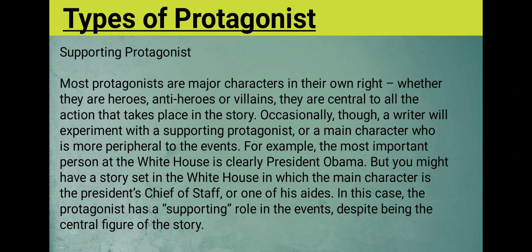Supporting protagonist: most protagonists are major characters in their own right — whether they are heroes, antiheroes, or villains, they are central to all the actions that take place in the story. Occasionally, though, a writer will experiment with a supporting protagonist — a main character who is more peripheral to the events. For example, the most important person at the White House is clearly the president, but you might have a story set in the White House in which the main character is the president's chief of staff or one of his aides. In this case, the protagonist has a supporting role in the events despite being the central figure of the story.